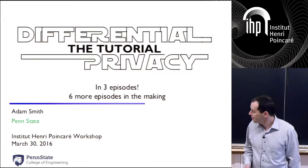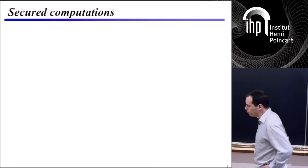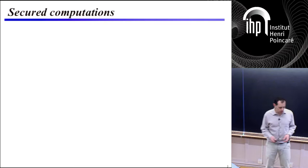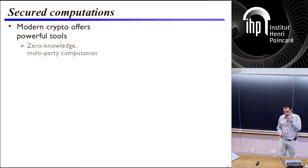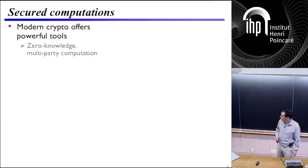So far this week, we've been hearing a lot about various kinds of secured computations. As we've seen, modern cryptography offers a number of powerful tools, everything from zero-knowledge to multi-party computation to even things like program obfuscation and beyond.